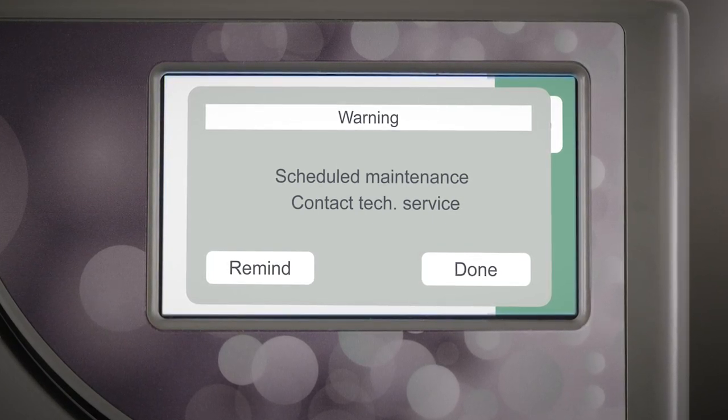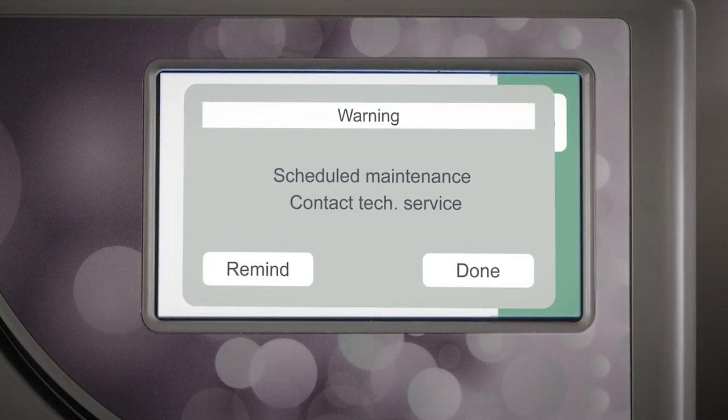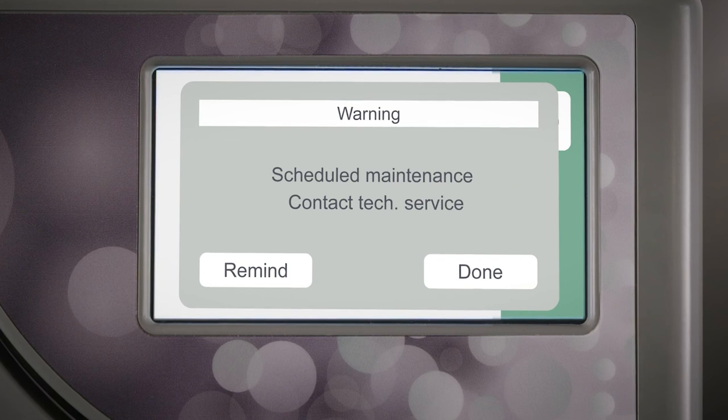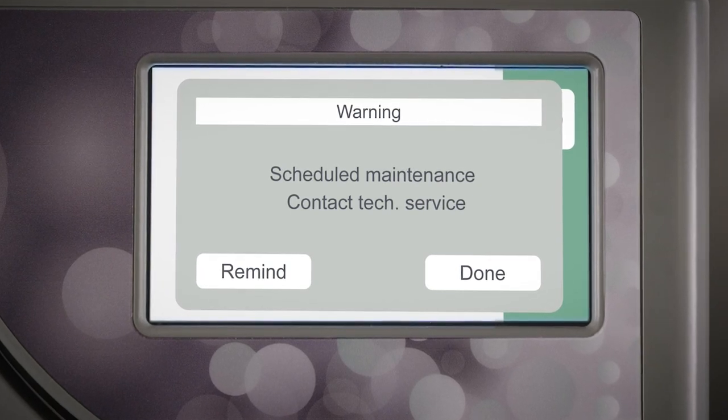The Bravo G4 will also display an automatic maintenance warning message for general service every 3,000 cycles, which is roughly every three years.